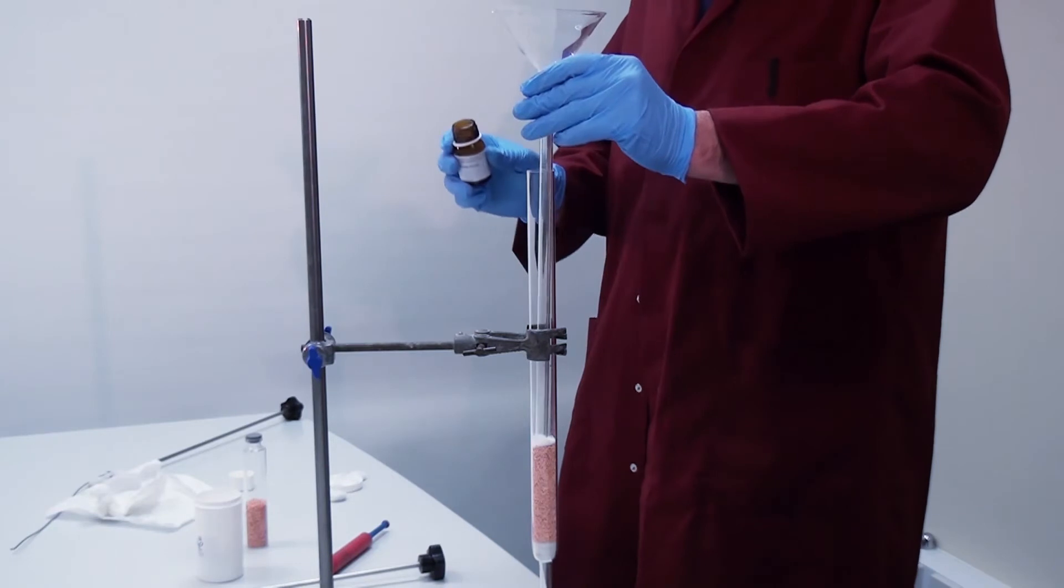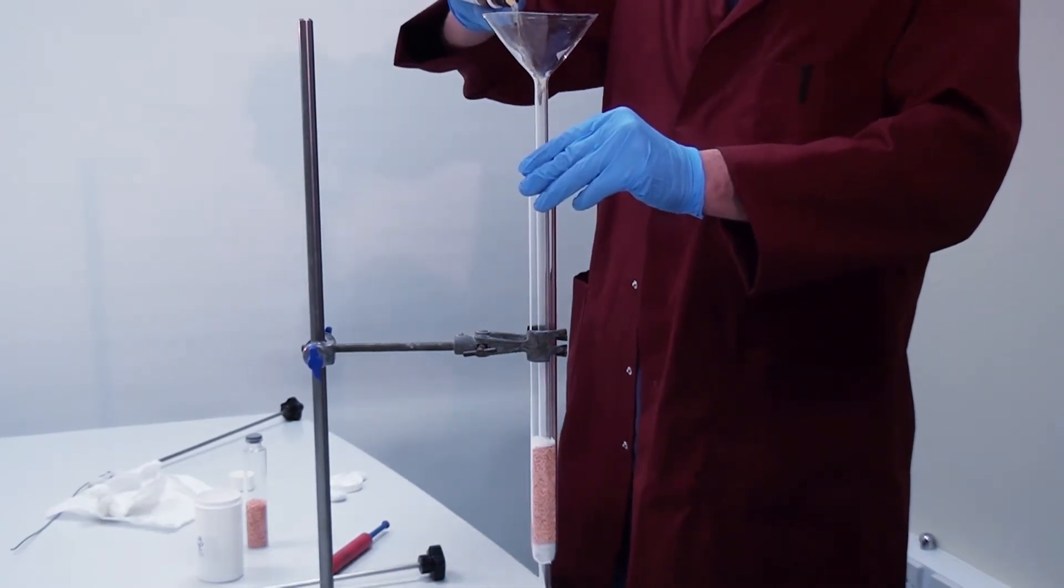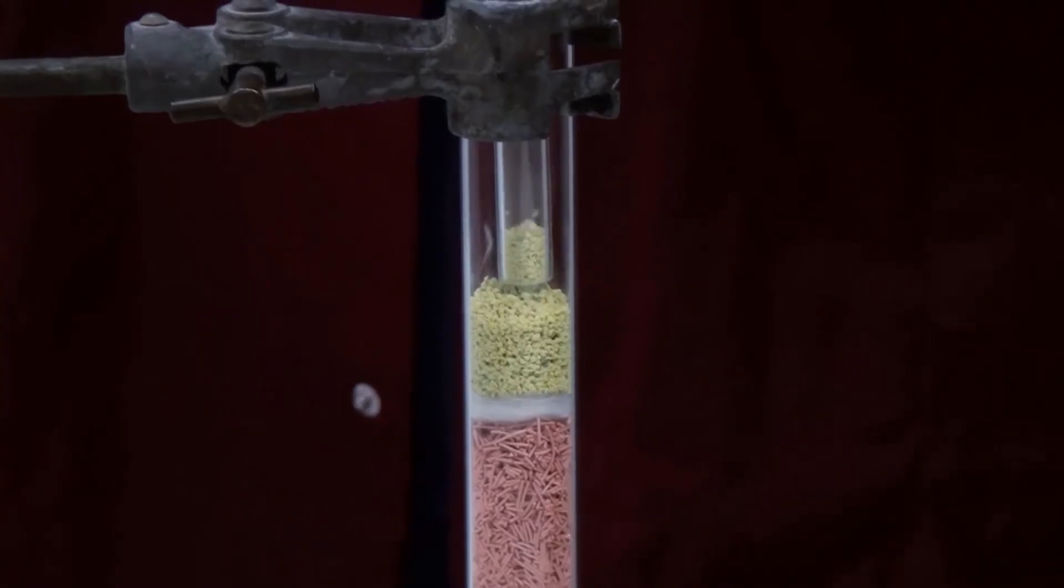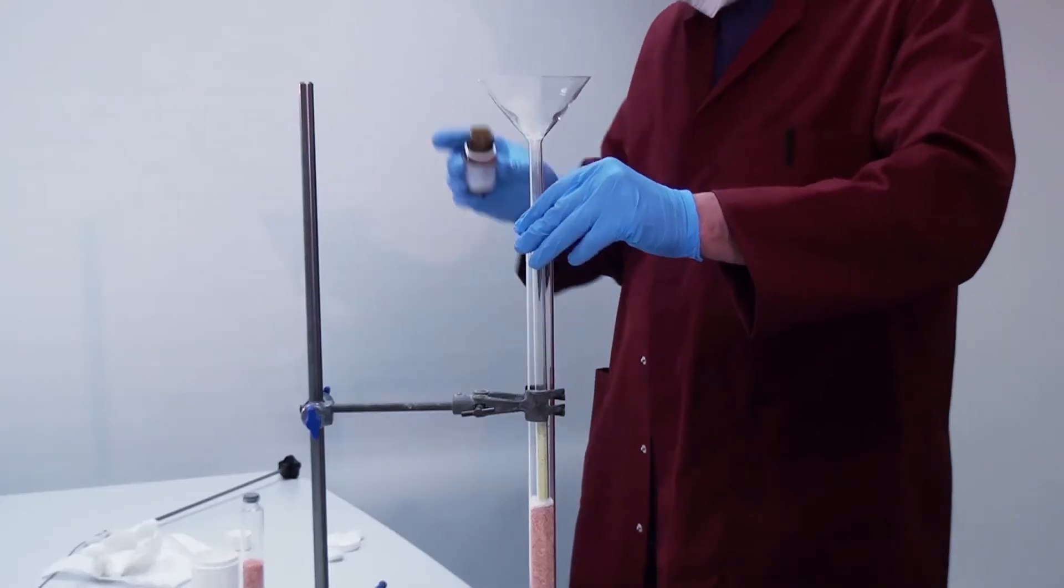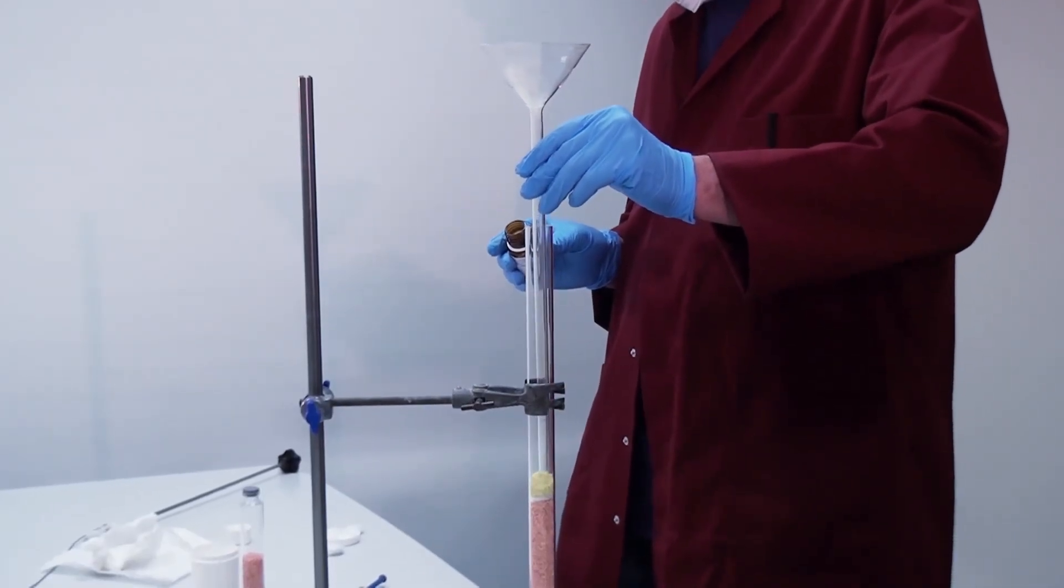Add the next layer of reagent, in this case, tungsten oxide. To avoid dust sticking to the inner walls of the quartz tube, it is helpful to add the reagent via a long-necked funnel.